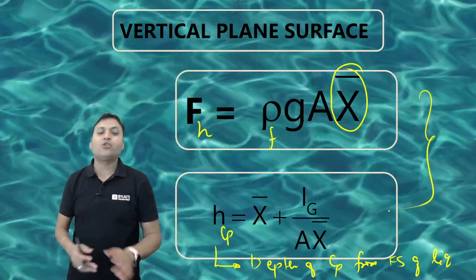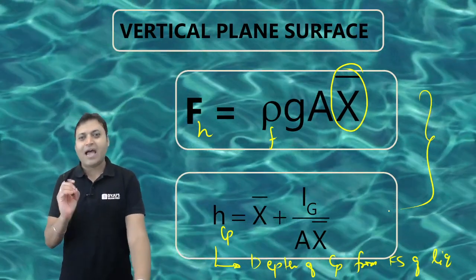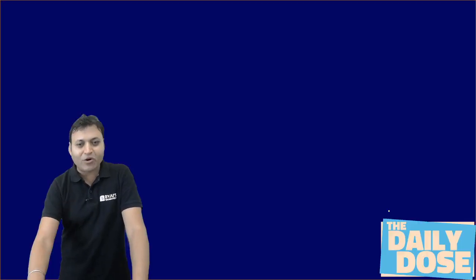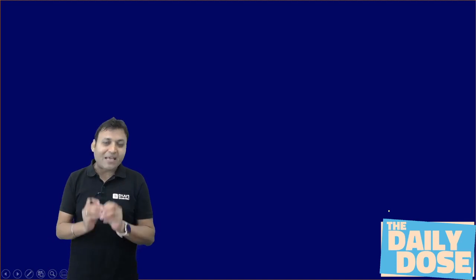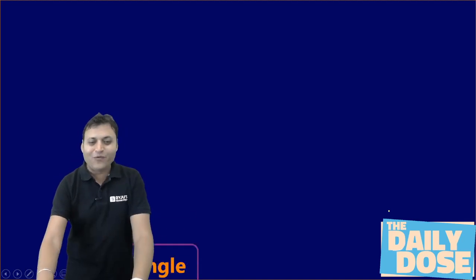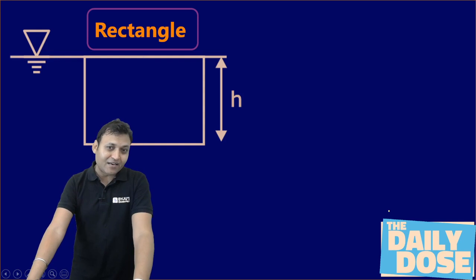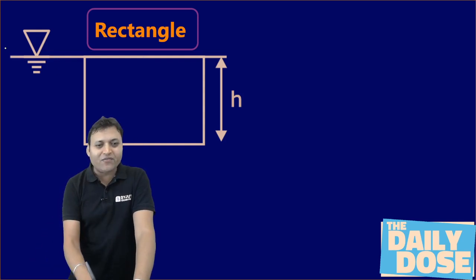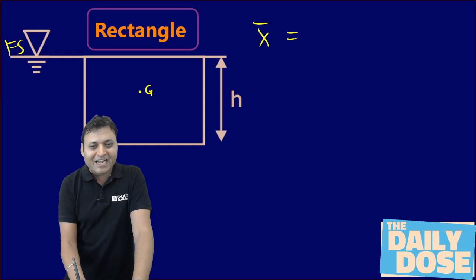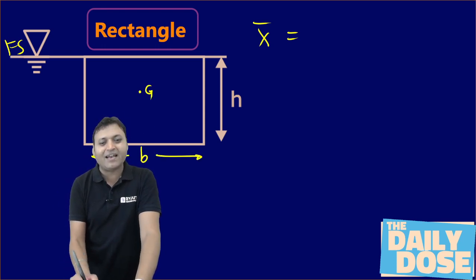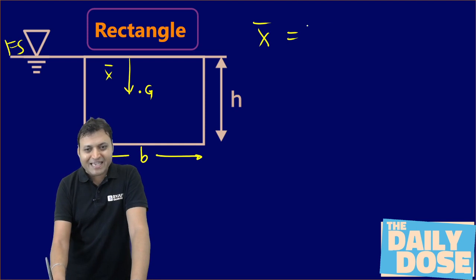This is the normal procedure to calculate the magnitude of hydrostatic force on a vertical plane surface and the depth of center of pressure. Now I will be talking about a trick, but let me tell you this trick to find out the depth of center of pressure is applicable only for special surfaces. Specifically, if the vertical plane surface is in the form of a rectangle having the top edge of the rectangle coinciding with the free surface. If this is the situation, then the width of the rectangle is B and the depth of the centroid of this rectangle from the free surface is x̄.